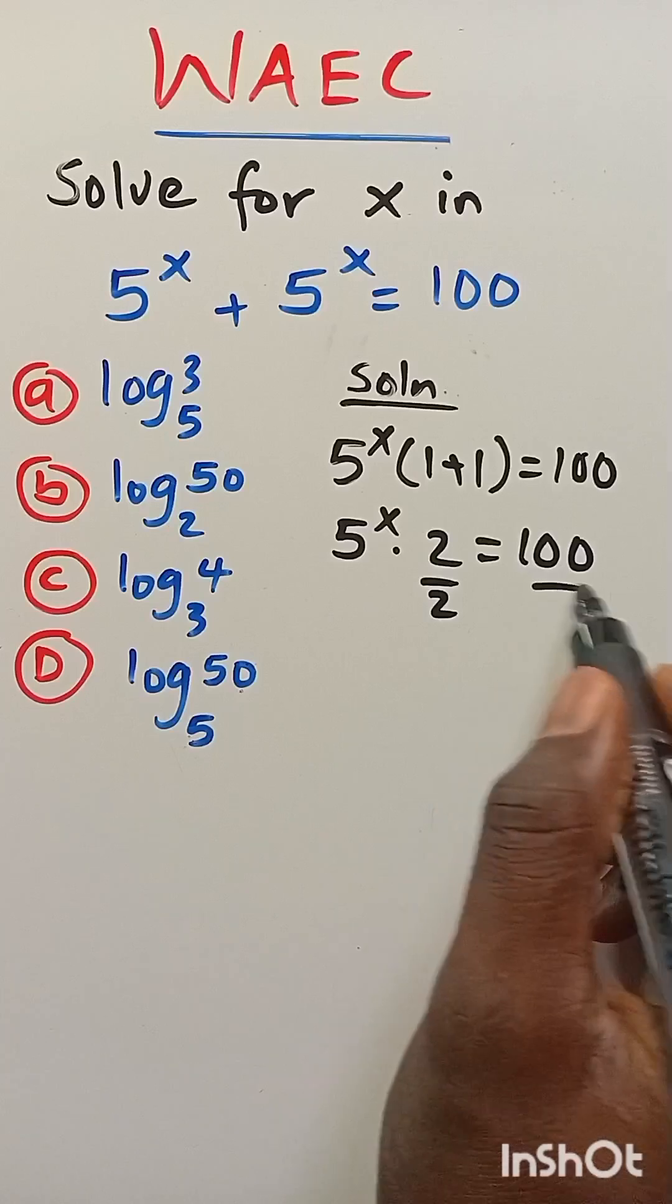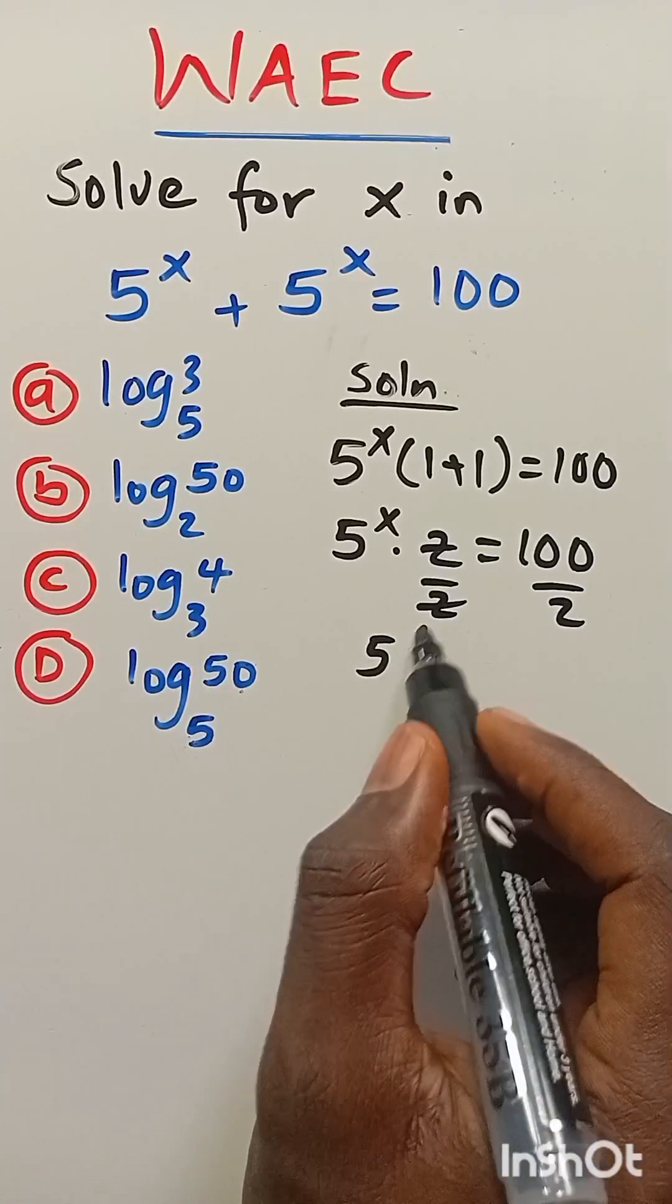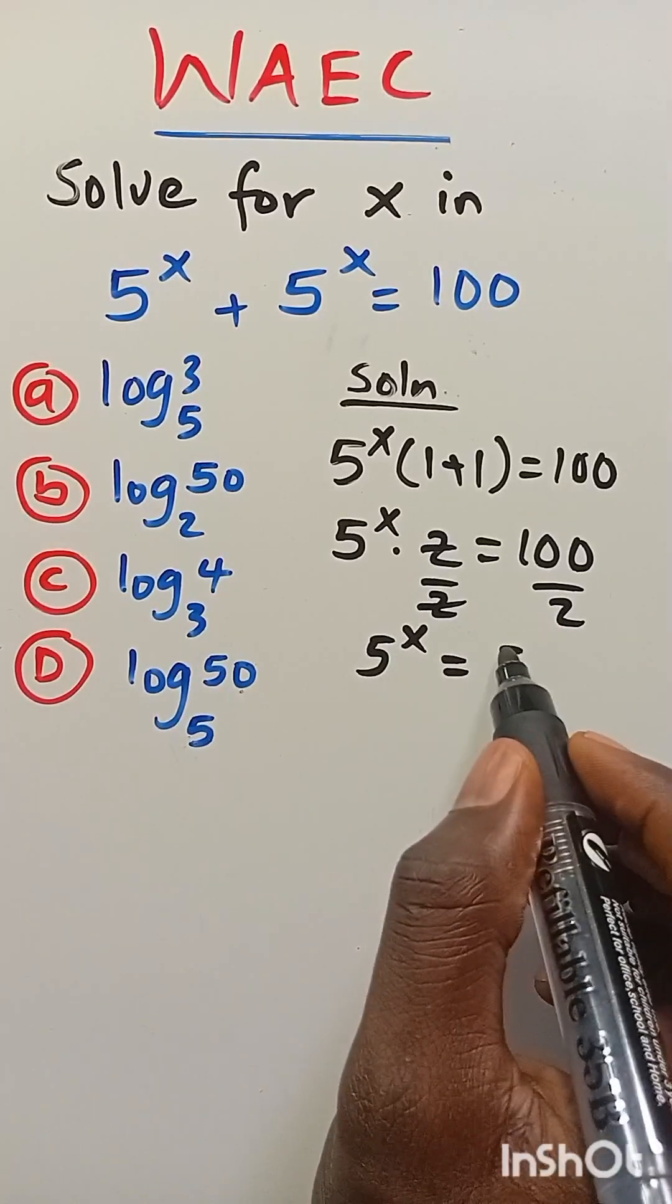Divide both sides by 2. This will cancel out. We have 5 to the power of x equals 50.